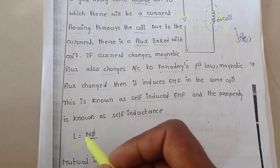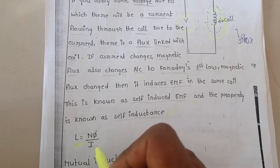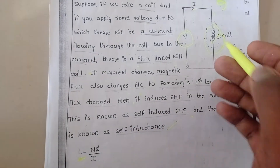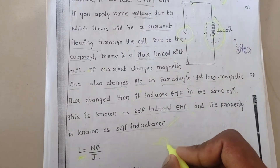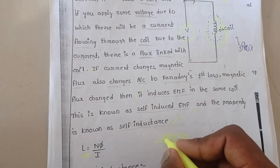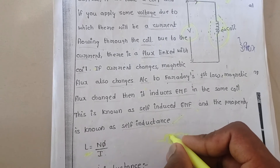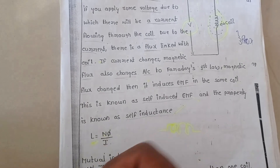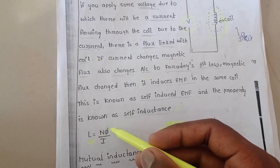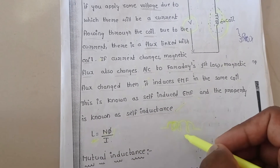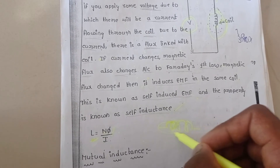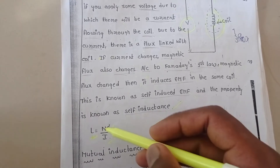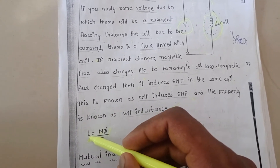How to find self inductance: L equals Nφ divided by I, where N is the number of turns of the conductor. Each round of the inductor is termed as a turn. N is the number of turns of the inductor, φ is the flux produced by the inductor, and I is the current flowing through the inductor. Nφ divided by I is the self inductance L.